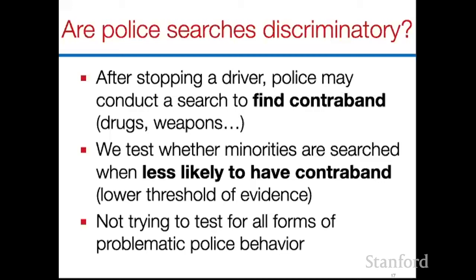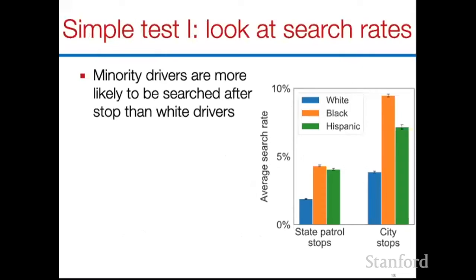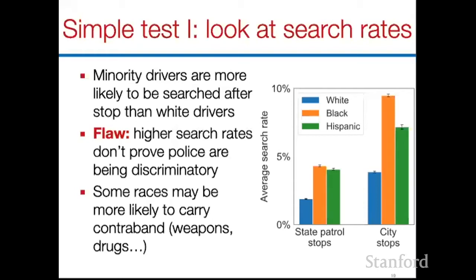This is only one way police can discriminate — there are many other problematic things police can do. We're testing for a very specific type. We're going to test whether minorities are searched at a lower threshold of evidence, meaning when they are less likely to have contraband. For example, if police search white drivers when they're 40% likely to carry contraband but search Black drivers when they're only 20% likely, those different thresholds would be discrimination under our definition. A first simple test is to look at search rates — how likely someone is to be searched after a stop. The results show Black and Hispanic drivers are much more likely to be searched than white drivers.